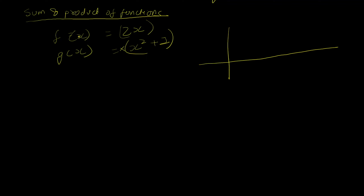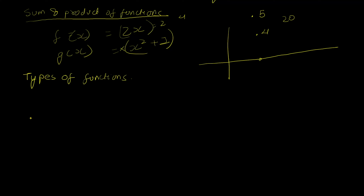Multiplying two functions means looking at the value of each function at the same input and multiplying them. At x = 2, f produces 4, and g produces 2² + 1 = 5, so the product of these two functions at that point is 20. The same goes for sum — we just add the numbers. It's a pretty trivial concept about sum and product of functions at specific points.